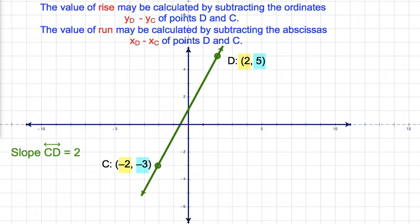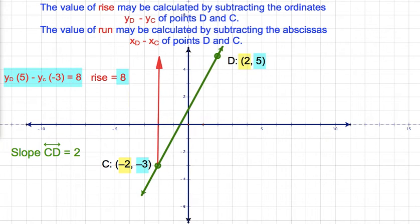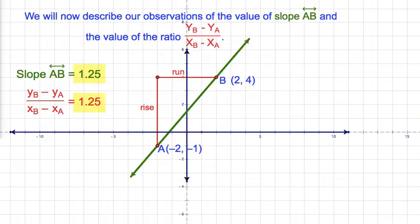The value of rise may be calculated by subtracting the ordinates of points D and C. The value of run may be calculated by subtracting the abscissas of points D and C. We will now describe our observations of the value of the slope of line AB and the value of the ratio of the difference of the y-coordinates of points B and A to the difference of the x-coordinates of points B and A, as shown by the values highlighted in yellow.